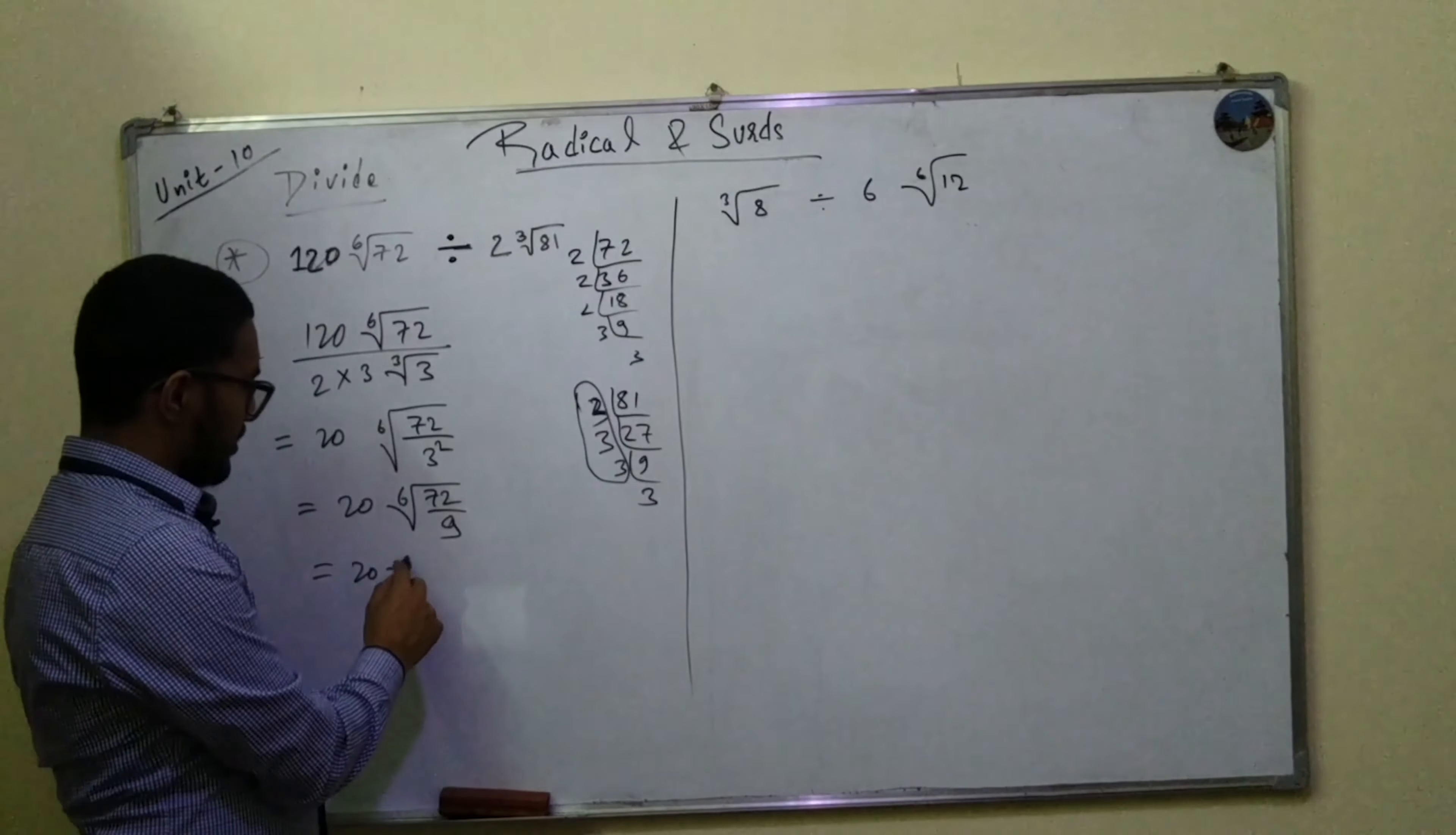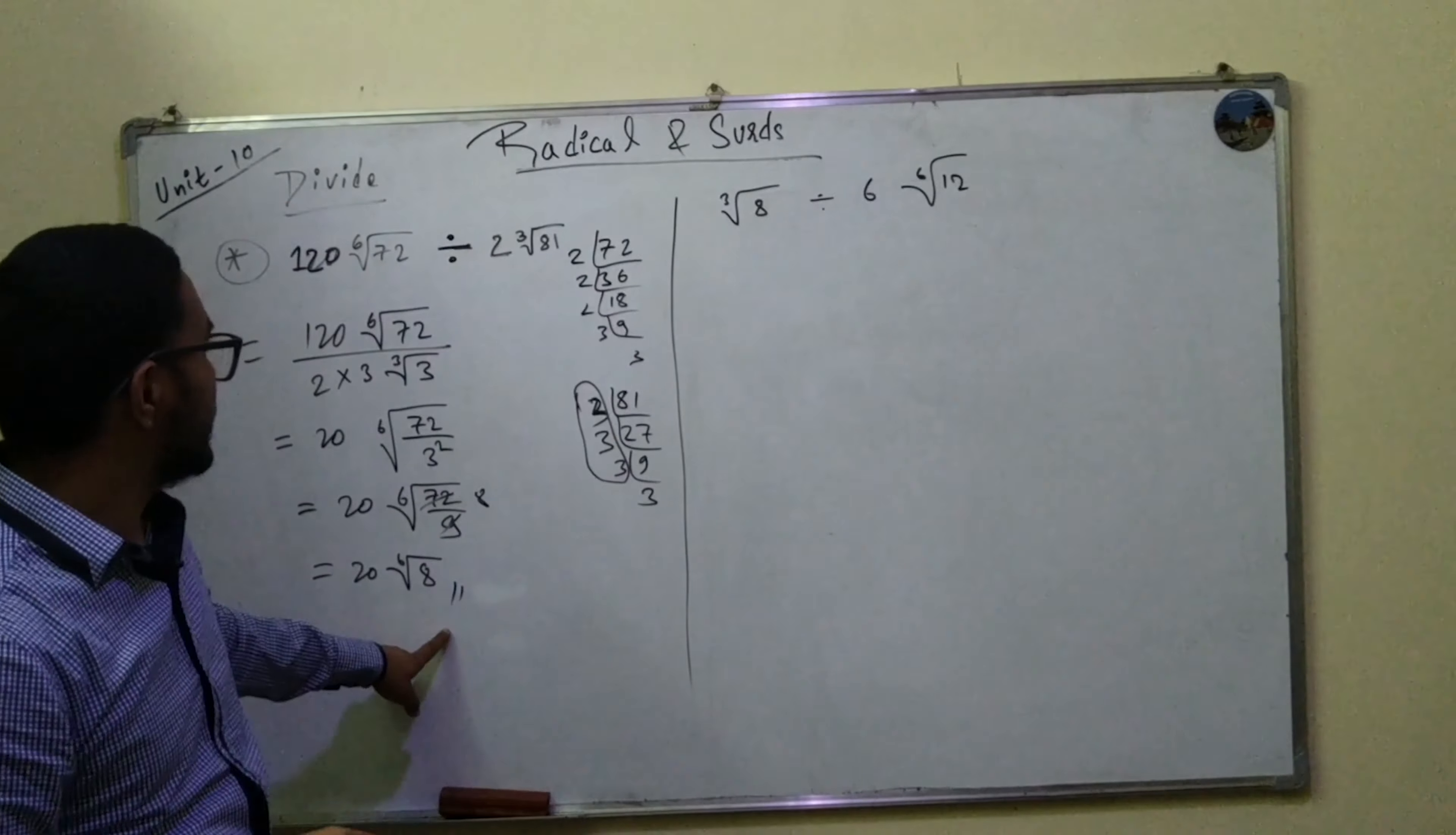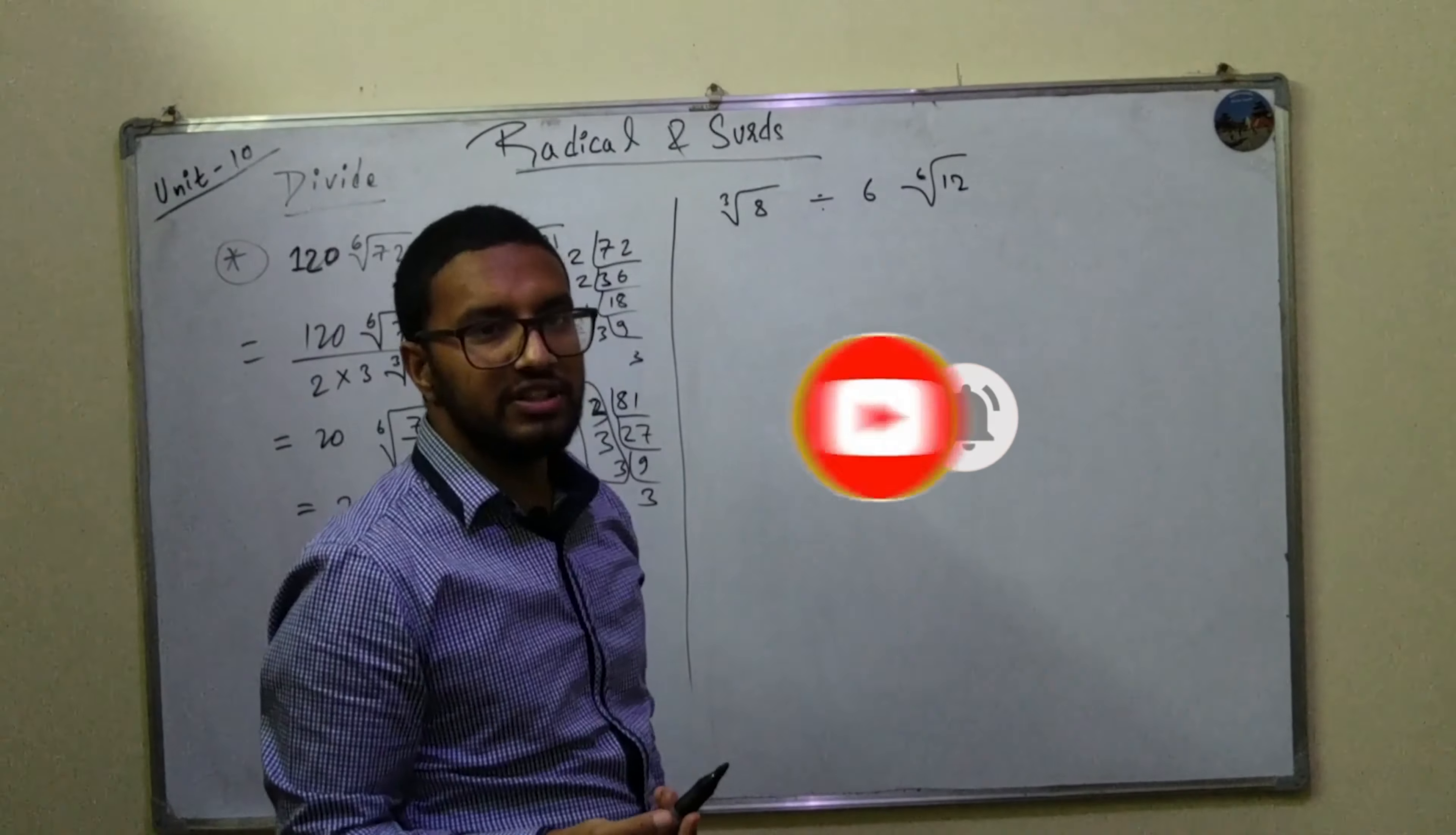So 120 under 6 by 8, right. So 8 is a 9 by 2, so that means we can just cut it, right. So we can basically do it in that form. Okay, so all you need to remember is that what I did was basically if it was in the pure form, first of all I changed it into mixed. After that I made the order same in this case as well.